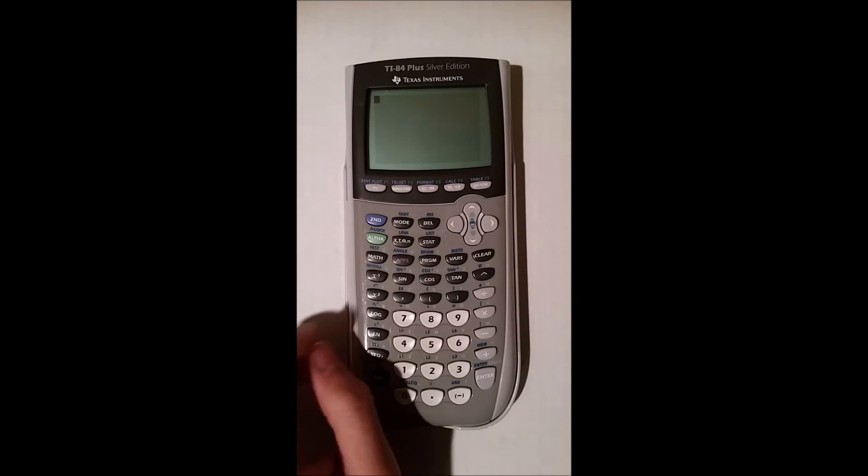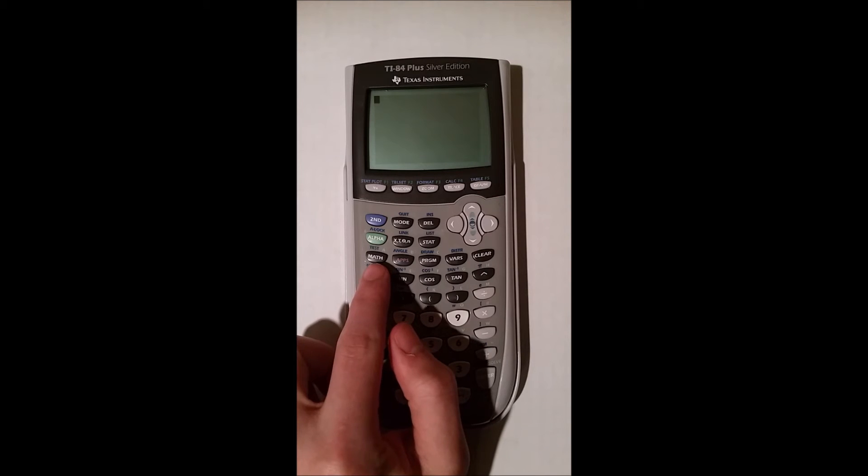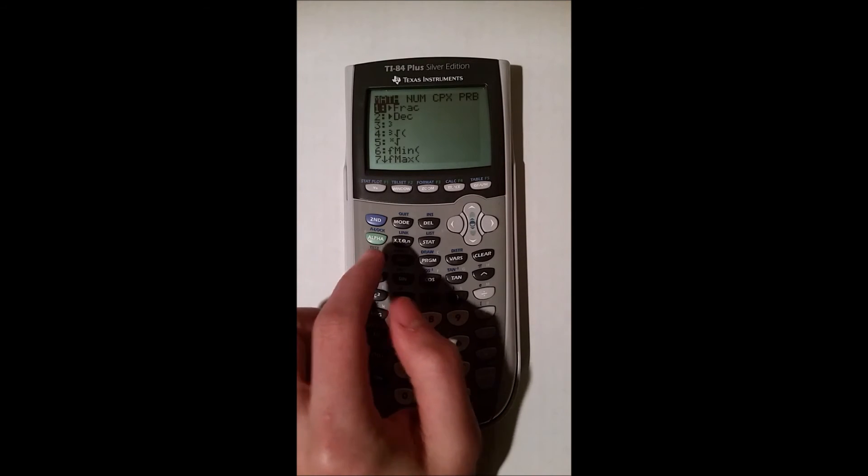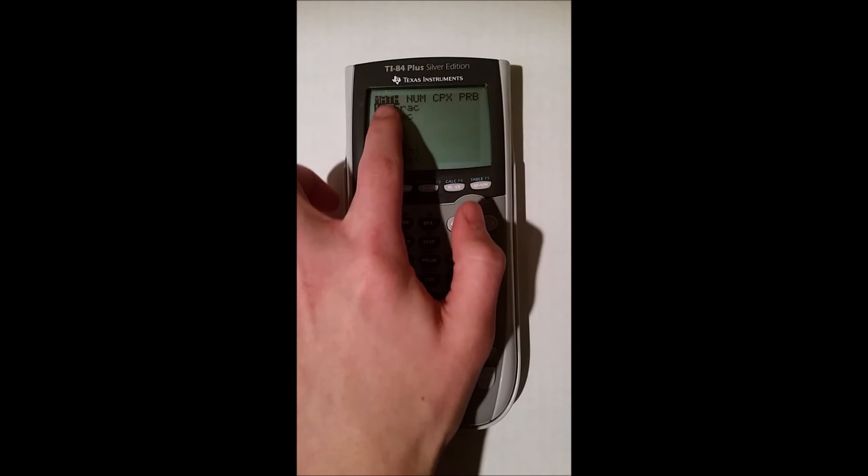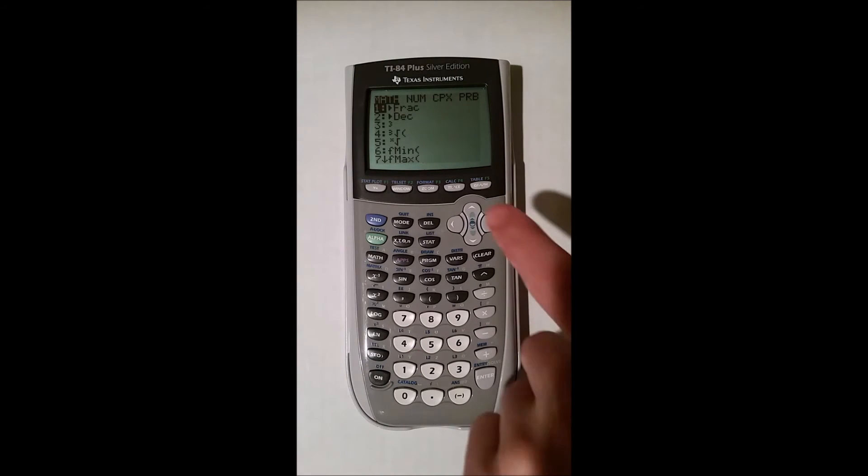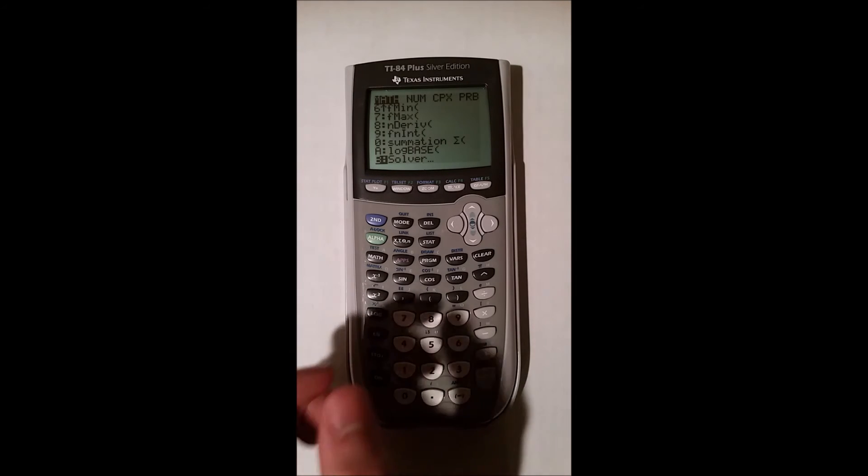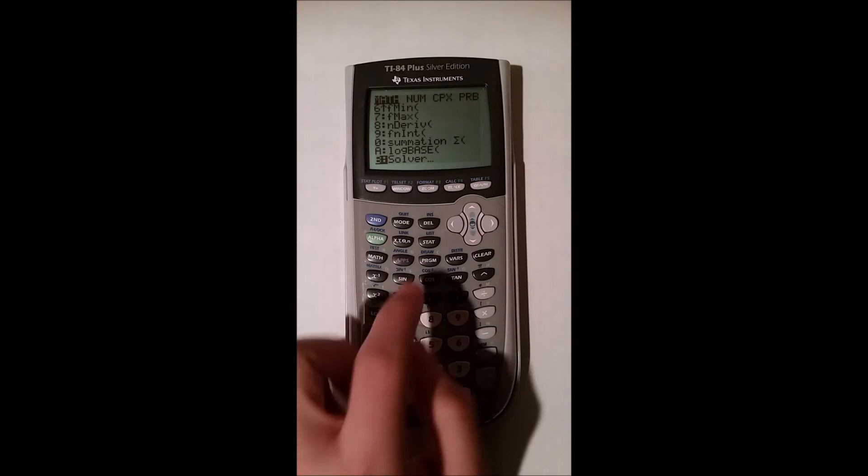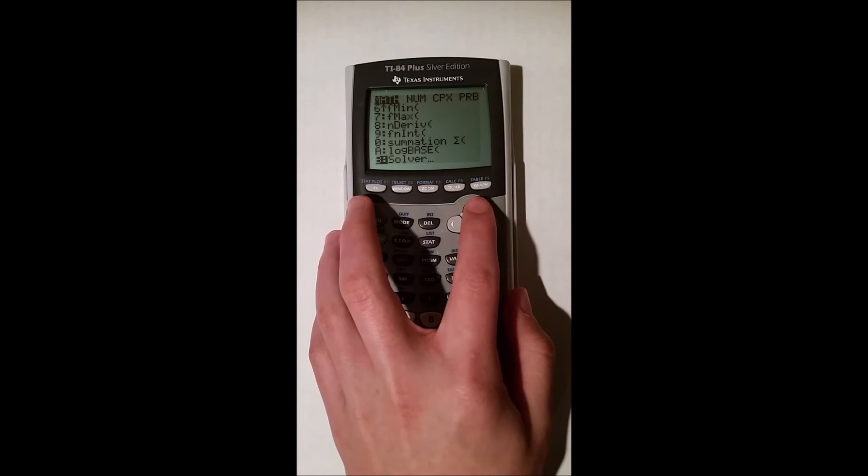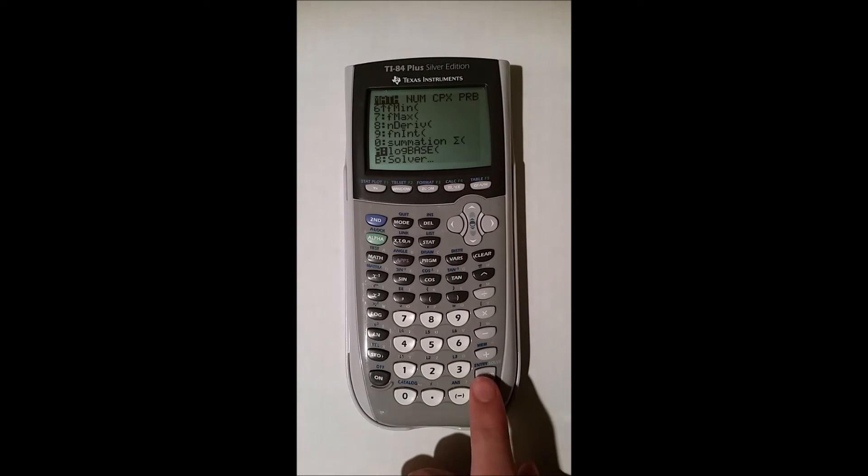And so what you're going to do is you're going to hit the math button right here. So you're going to hit math and you're going to stay under math. And what you're going to do is you're actually going to hit the arrow up. And what that'll do is bring you to the bottom of the list. And if you notice here, it says log base. So you're going to scroll up one and hit enter.